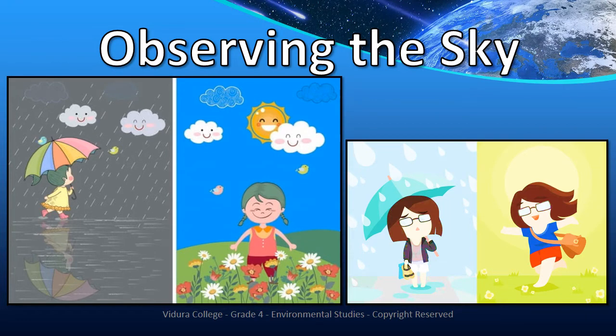What can we see on a bright sunny day? We can see the sun shines brightly, birds and butterflies fly in the air, and the sky is mostly cloudless and clear. The wind blows gently and it gives you a warm feeling.